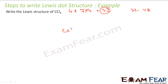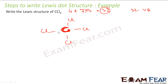I have carbon as the central atom and let's add 4 chlorine. Since I have added 4 chlorine with 4 bonds, how many electrons have I consumed? 4 into 2, that is 8 electrons consumed by 4 bonds.